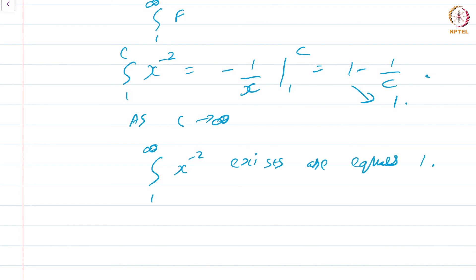As C approaches infinity, this quantity converges to 1, which means the integral from 1 to ∞ of x^(−2) exists and equals 1. The best way to make sense of these improper integrals is to draw the graphs of the various functions and see which seem to have improper integrals and which do not. In the next module, we will apply this basic theory to prove a nice test for convergence called the integral test. This is a course on real analysis and you have just watched the module on improper integrals.